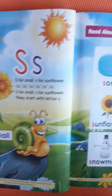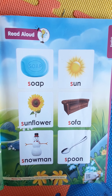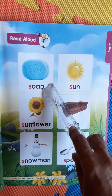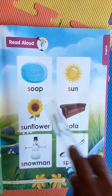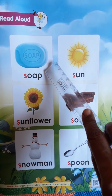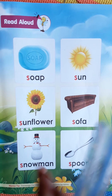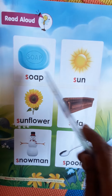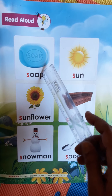Now we go to the next page, page 13. I read aloud — read aloud means I have to read loudly. Encourage the child to recognize the picture and tell them it is related to letter S. S for soap. When do you use soap? When you wash your hands — when you go out and come back, before and after lunch, dinner, when you go to the washroom or take a bath, we use soap.